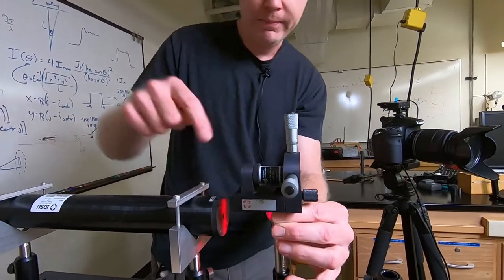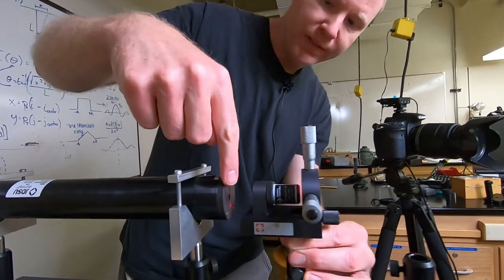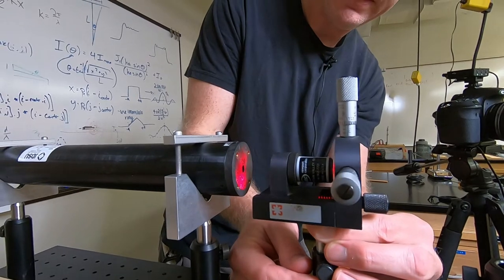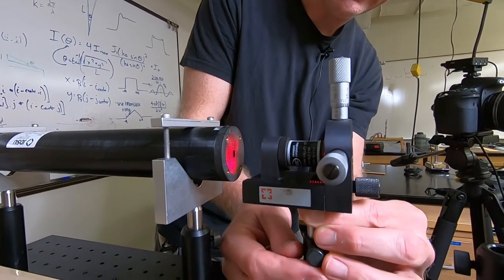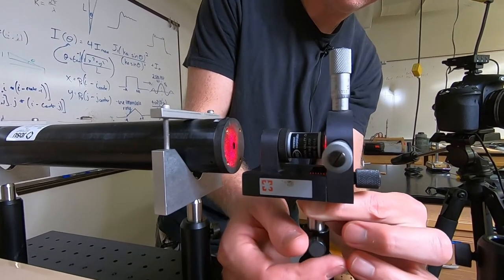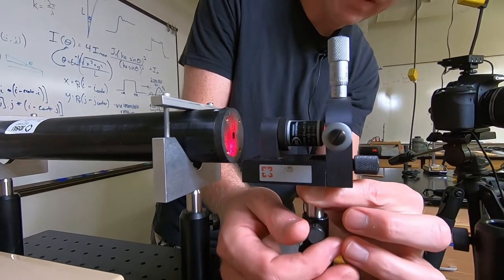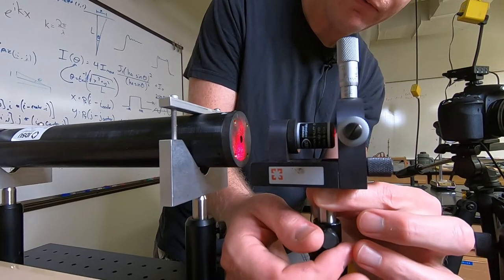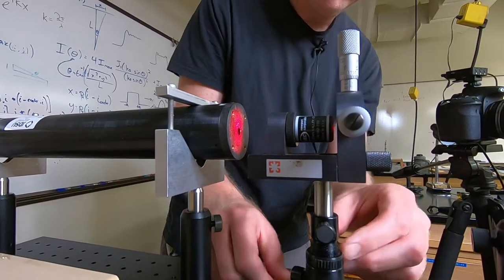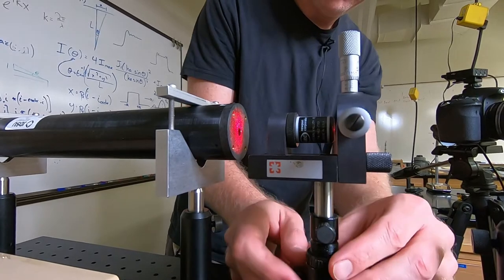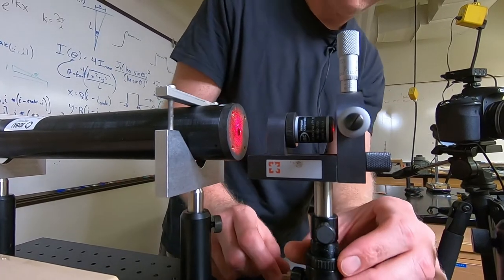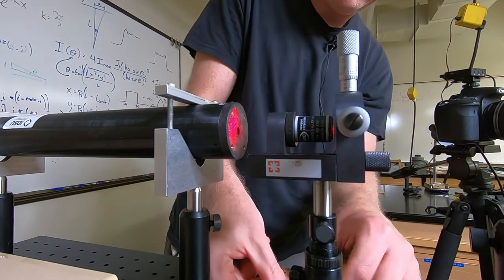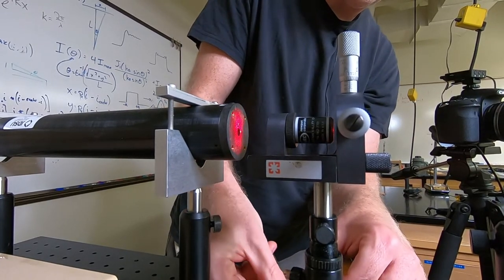I'm going to put it in the mount, and the thing to watch here is the back reflection into the laser. If I'm kind of off in either direction, the back reflection into the laser doesn't go right back into the laser. By carefully holding it and locking it in, I can get the gross adjustments, and I can do fine adjustments with this ring to really get the height and the X and Y correct.